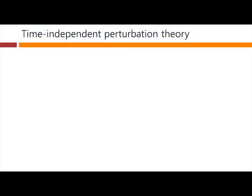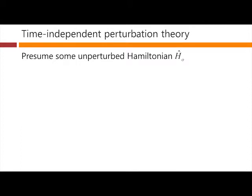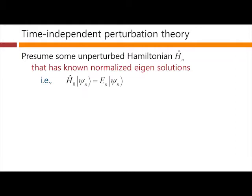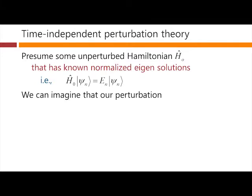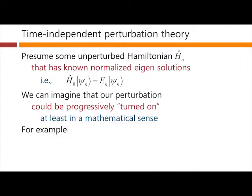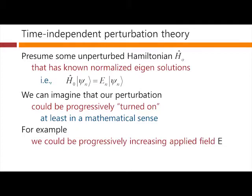Formally, we're going to construct time-independent perturbation theory. We start out by presuming we have some so-called unperturbed Hamiltonian H₀, which has some presumably known and normalized eigensolutions. So H₀ operating on its eigensolutions gives psi_n with an eigenenergy E_n. Now, we imagine that our perturbation could somehow be progressively turned on — not in a time-dependent sense, but in a mathematical sense, that we could progressively make our perturbation stronger and stronger mathematically.